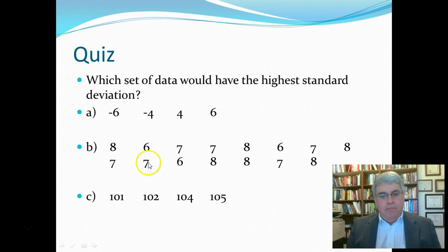Why is that? Because, let me look at the range, and it goes all the way from minus 6 to plus 6. We can compare that to B, where everything is 6, 7, or 8.